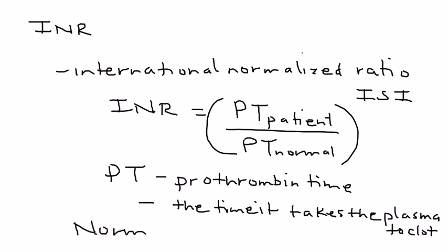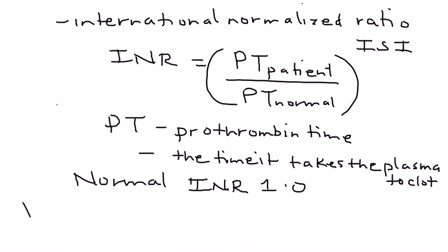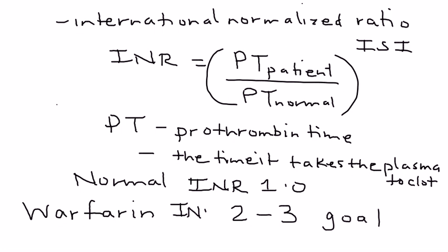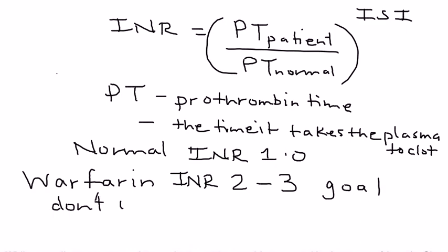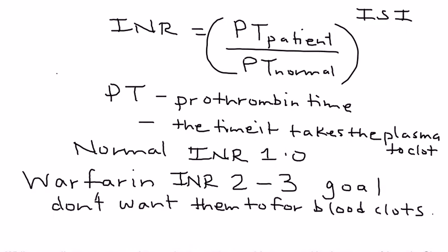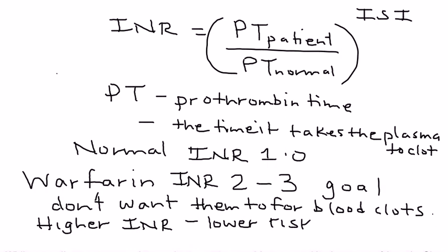The normal INR in our blood is about 1.0. Patients on warfarin will have a higher INR, and the goal is to keep their INR between 2 and 3. We don't want patients to form blood clots — for example, after a pulmonary embolism or deep venous thrombosis. The higher the INR, the lower the risk of clot formation, essentially because it takes longer to form a blood clot.